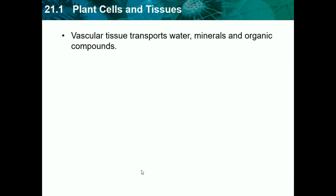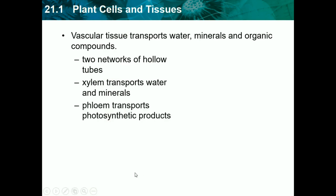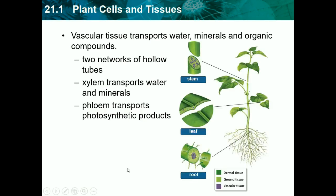Then we have vascular tissue, which transports water, minerals, and organic compounds. It forms two networks of hollow tubes. We have the xylem, which transports water and minerals — we need to know about the xylem. And then we have the phloem, which transports photosynthetic products. Xylem transports water and minerals from the roots to the top of the plant, while phloem transfers from the leaves to the roots or to the ground tissue where everything is stored.